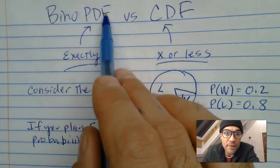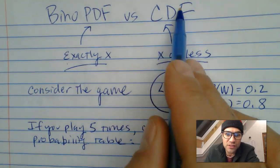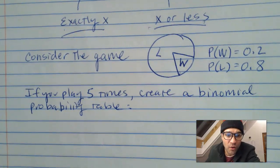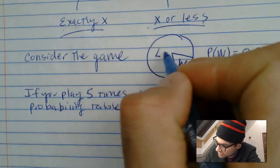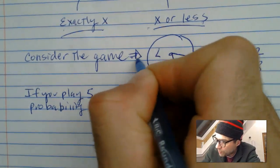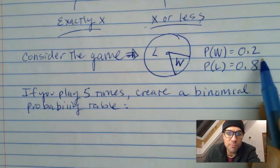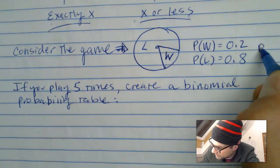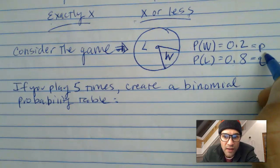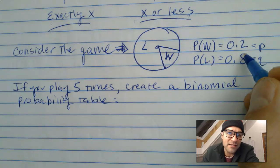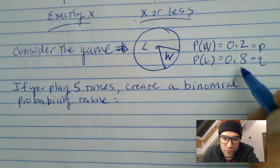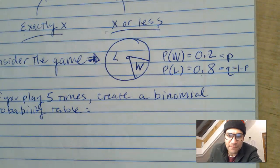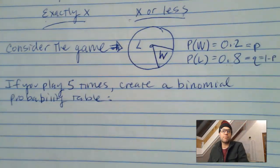PDF is exactly X, where CDF is X or less. We're going to consider the spinner game from the last video. The probability of winning is 0.2 and the probability of losing is 0.8. Some books call the probability of winning P and the probability of losing Q, where Q is just 1 minus P — so 1 minus 0.2 gives you 0.8.